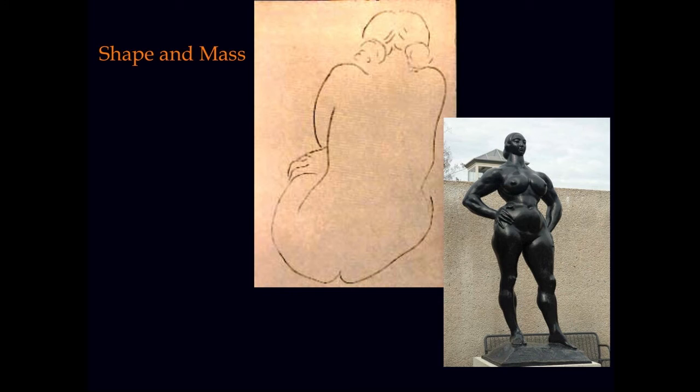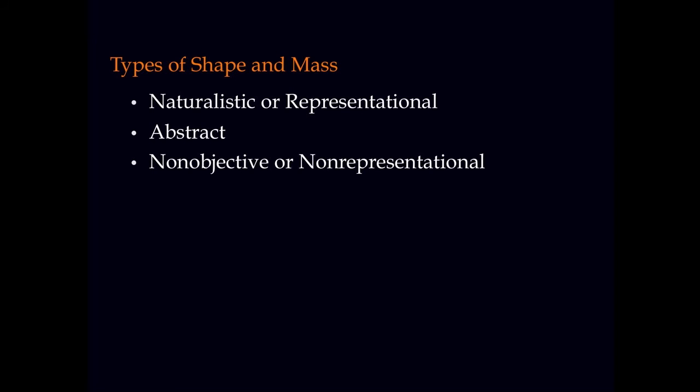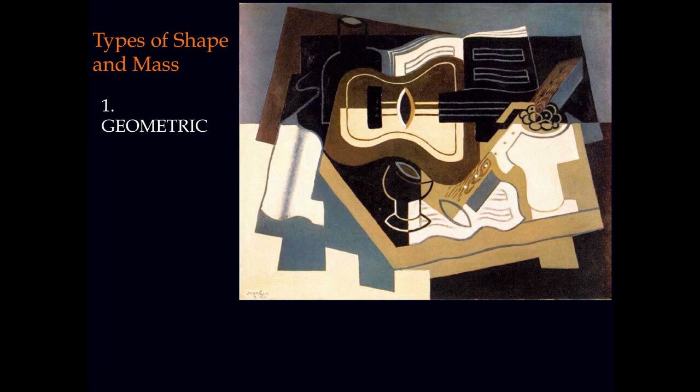Just a reminder: shape is 2D, mass refers to 3D. The types of shape and mass are naturalistic or representational, abstract, non-objective, non-representational — just like the first section of our class when we went over the three types of art.